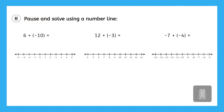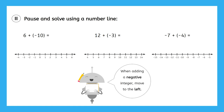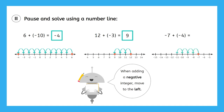Pause the video now to try the practice problems on the PDF using a number line. Remember, when we're adding a negative integer, we move to the left on the number line. For the first problem, 6 plus negative 10: starting at 6 and moving to the left 10 puts us at negative 4. For the second problem, 12 plus negative 3: we start at 12 and move to the left 3, and that puts us at 9. And finally, negative 7 plus negative 4: we start at negative 7 and move to the left 4, and that puts us at negative 11.